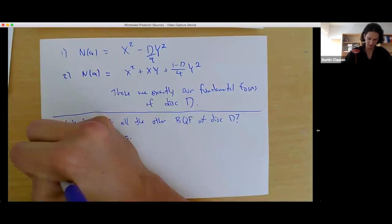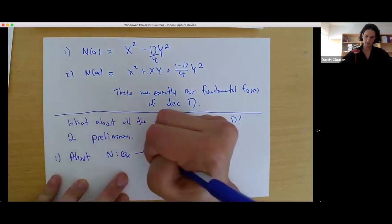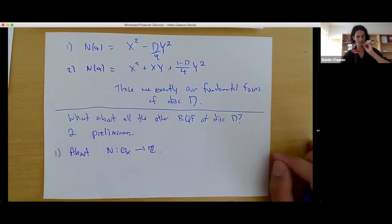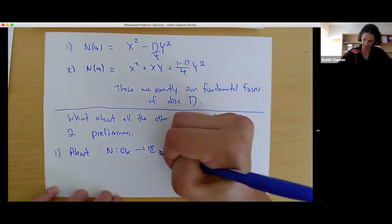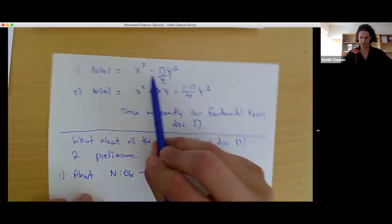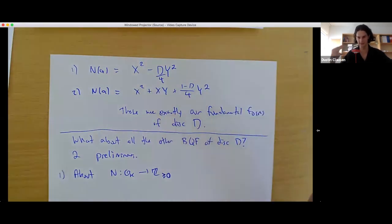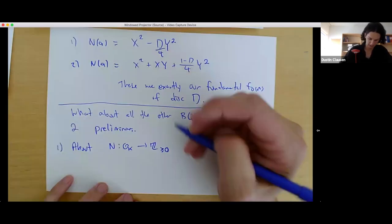Two preliminaries before we reach the main theorem. The first is about the norm function, our most important function for this lecture. The norm actually lands in the non-negative integers — it's given by positive definite binary quadratic forms, and it's also |alpha|² since it equals alpha · alpha-bar for alpha in the complex numbers.